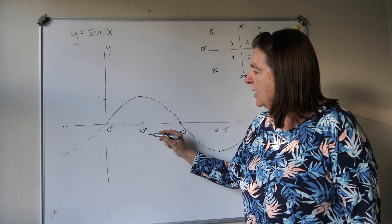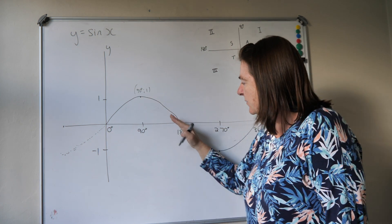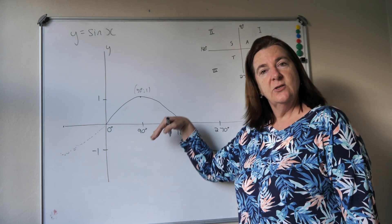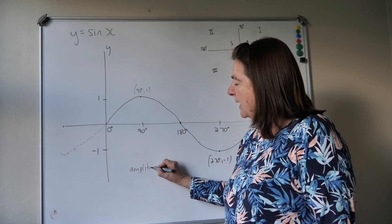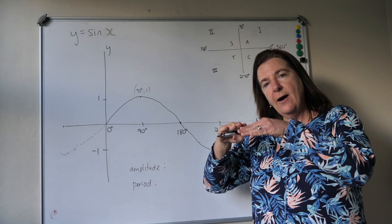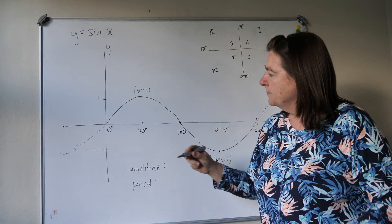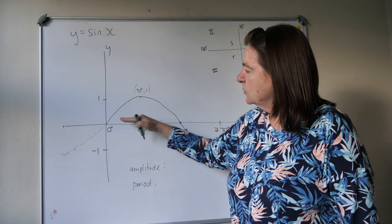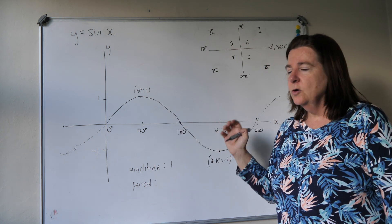That's our sine curve. At 90 degrees it's 1 — we always need to fill in the turning points, where its maximum is. Over here we have a minimum, so that would be 270, minus 1. Now there are two important things to know for each graph we draw: amplitude and period. The amplitude is how high and how low it deviates from the baseline. For this sine curve, it goes up 1 and down 1, so the maximum deviation from the middle line is 1 unit. The amplitude of the standard sine curve is always 1.